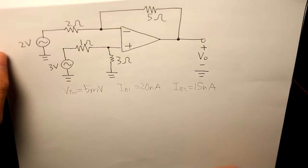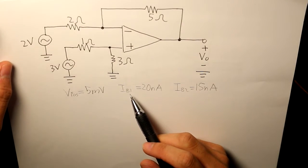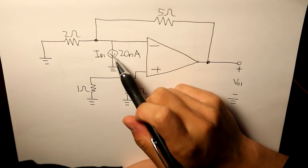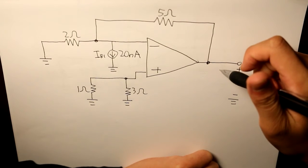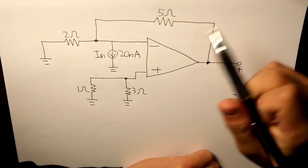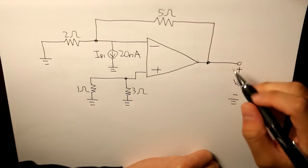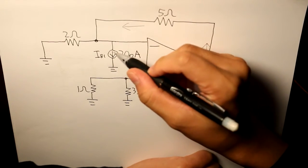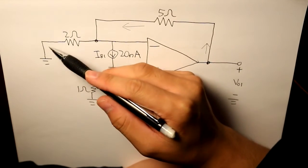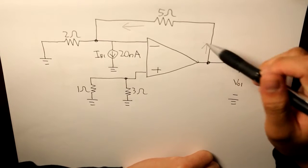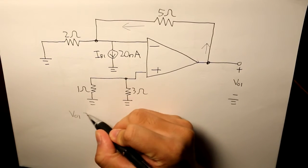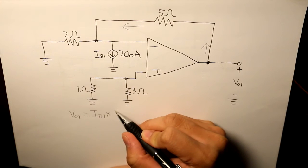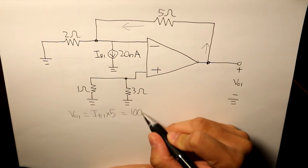Now let's start with the biasing current entering through the negative input terminal. Here is our current source. As I've said before in my previous video, for a bias current entering through the negative input terminal, the current flows from this node all the way to the current source and then to ground. There's no current flowing in the other branches. So VO1 from Ohm's law would essentially be IB1 times 5, and that would be 100 nanovolts.